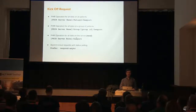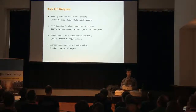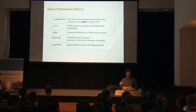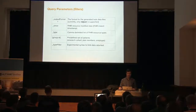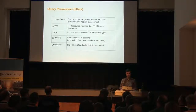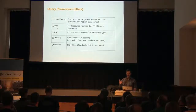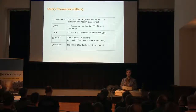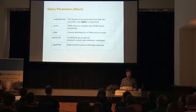This looks like calling any other FHIR operation until you add the header 'prefer: respond-async,' meaning the client isn't expecting all data right away but is asking for an asynchronous response. Additional parameters the client can supply include: the output format (the required format out of the box is NDJSON — new line delimited JSON); and underscore-since, which requests only resources updated on or after a particular timestamp. This allows a client that exports data initially to later ask for just what's new — say daily or weekly — using that underscore-since parameter.